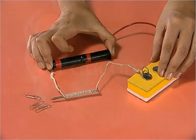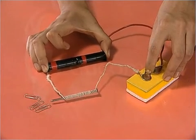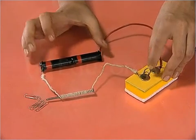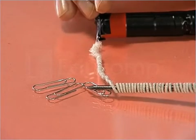Bring a few paper clips near any end of the nail. Turn the switch on. What happens? The clips are attracted towards the nail.